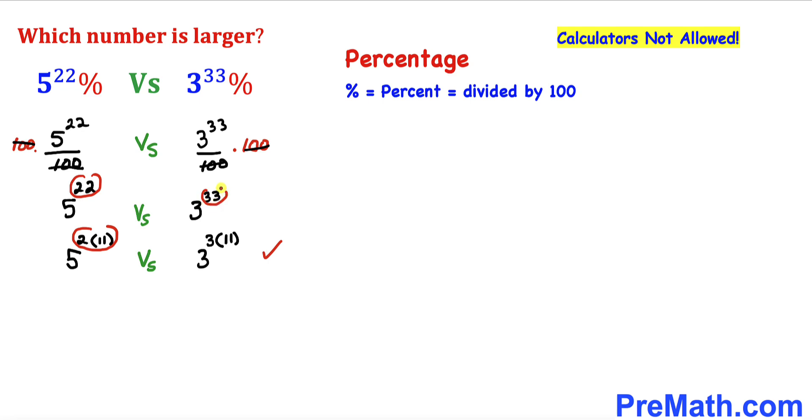Now let's recall the power rule of exponents. Whenever we have two nested exponents, we can multiply them out.